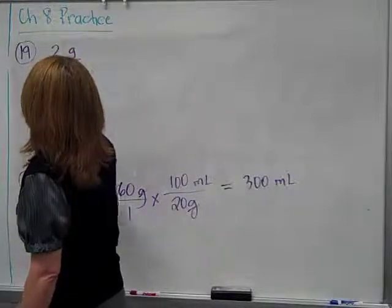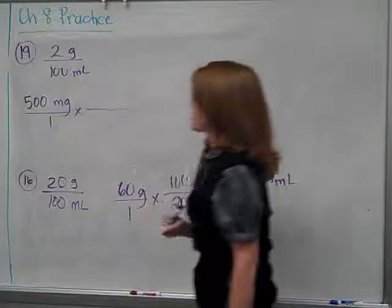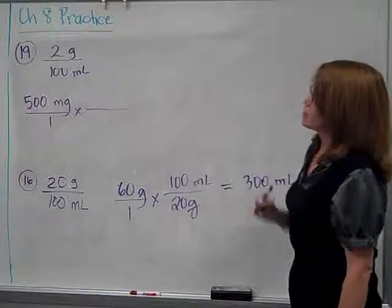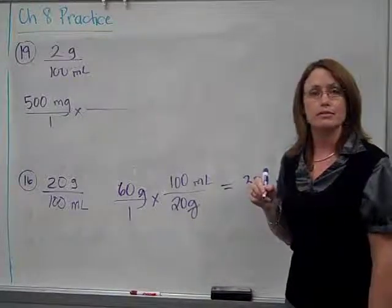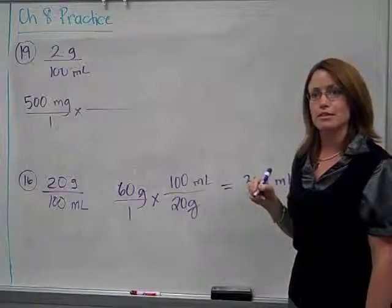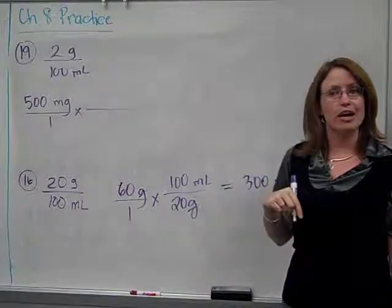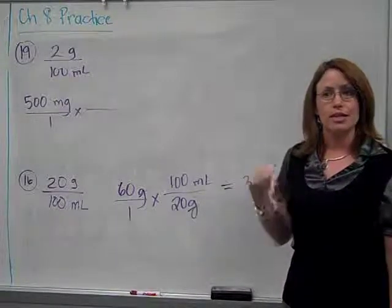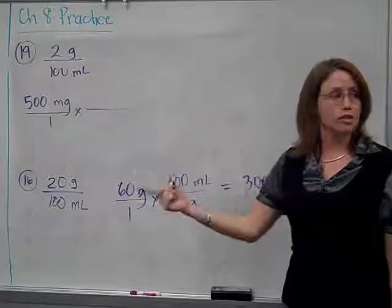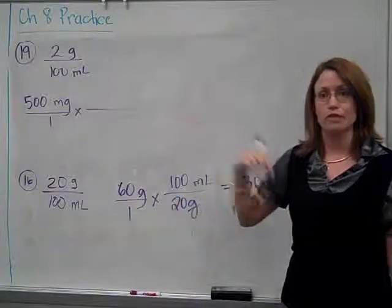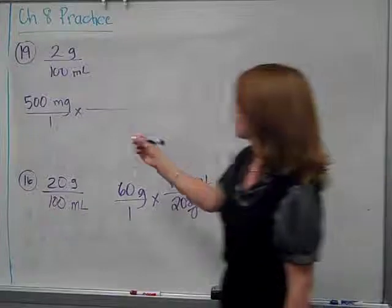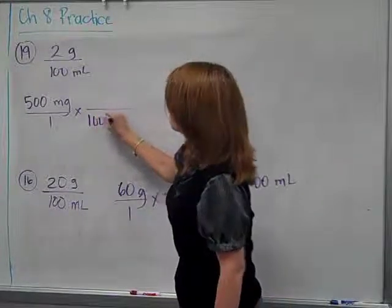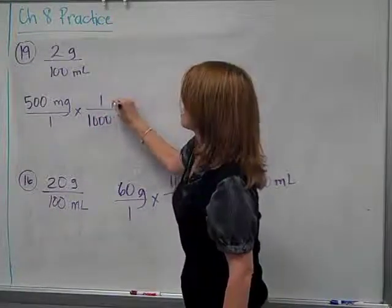But I'm going to start with 500 milligrams. This is how much I'm looking at. Now, I would want to flip my strength, but it's not ready yet. Because it's in grams, and right now I'm in milligrams. Can I get myself to what the strength is in? Can I go from milligrams to grams? Definitely. 1,000 milligrams, same thing as one gram.